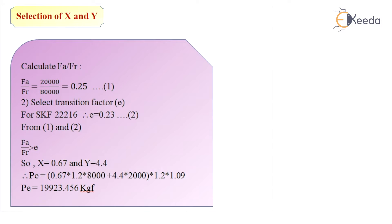So I can get the value of Pe as 0.67 × 1.2 × 8000 + 4.4 × 2000 × 1.2 × 1.09. So that gives me the value of Pe as 19923.456 kgf.